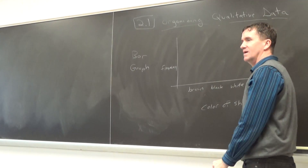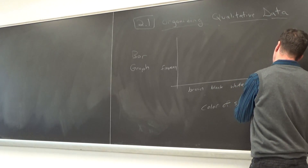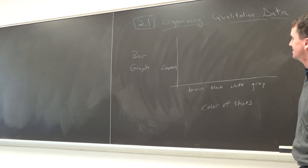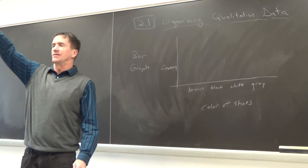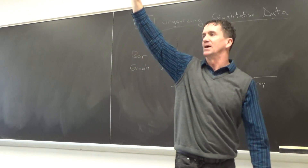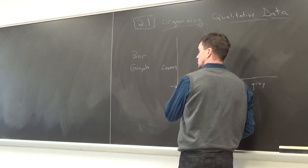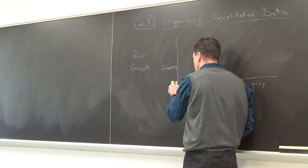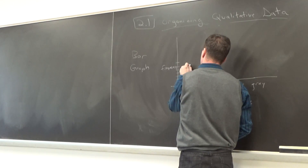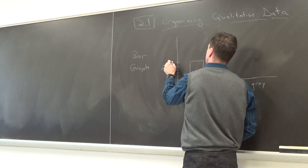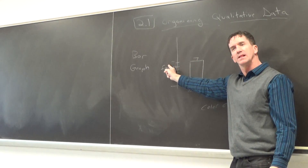I'm looking around the room — what color are those? I'm color deficient. We can do this for the classroom. Raise your hand if you've got brown shoes. I've got one, two, three, four, five, six, seven — I see seven people with brown shoes. So I count up seven tick marks this way. I like to put the number seven above the bar. Brown shoes: seven.